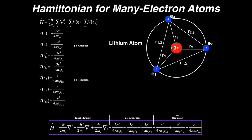Z is the charge of the nucleus — in this case it's three because it's lithium; if it were carbon, it would be six. E is the fundamental charge of an electron or proton, its positive value, which is 1.602 times 10 to the minus 19 coulombs. Then we divide by the constant four pi epsilon zero, and then divide by the particular radius. Remember that attractive terms are all negative.